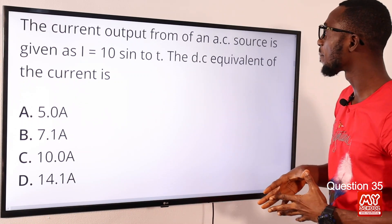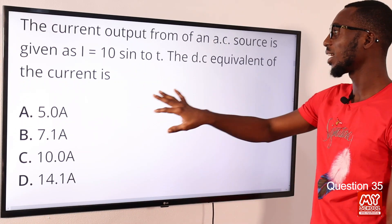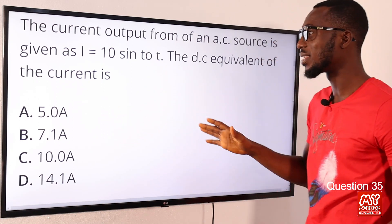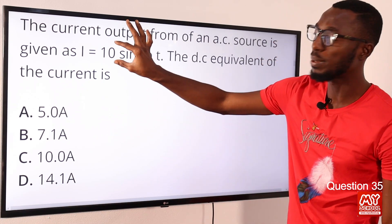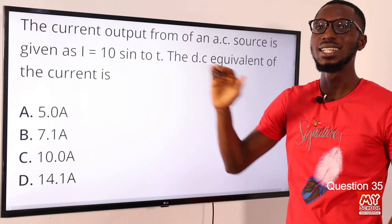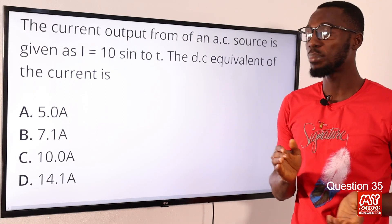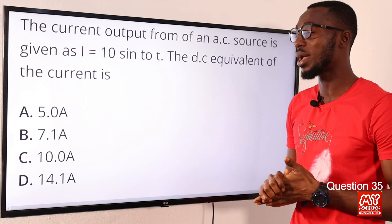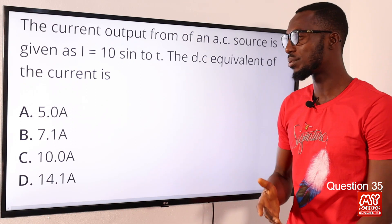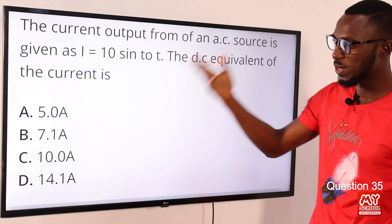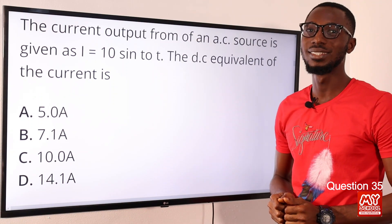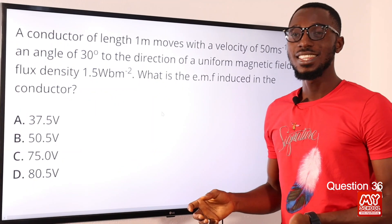Question 35: The current output from an AC source is given with a peak value. The RMS equivalent of the current is the peak value divided by √2. The peak value is 10, so 10 / √2 ≈ 10 / 1.414 ≈ 7.1 amperes. The correct option is option B — 7.1 amperes.